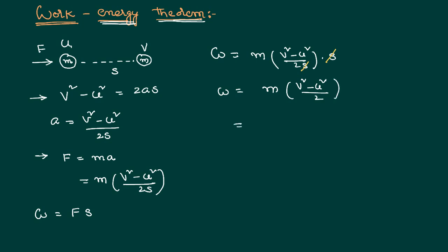We can rearrange this equation as ½mv² - ½mu². Therefore, we have proved that work done is equal to ½mv², which is the final kinetic energy because v is its final velocity. ½mu² is the initial kinetic energy.